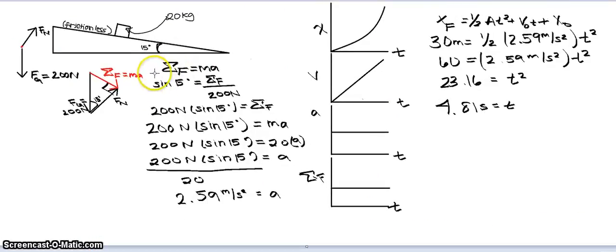Here's what I got. First, what I did was I drew the picture. Here's our ramp, and then our block, 20 kilograms. And then there's a 15 degree angle. It's frictionless, so we're ignoring friction, and we're also ignoring air resistance.